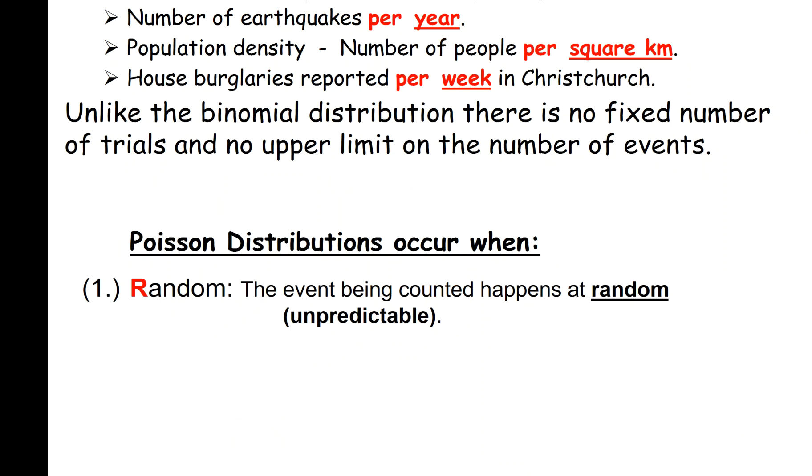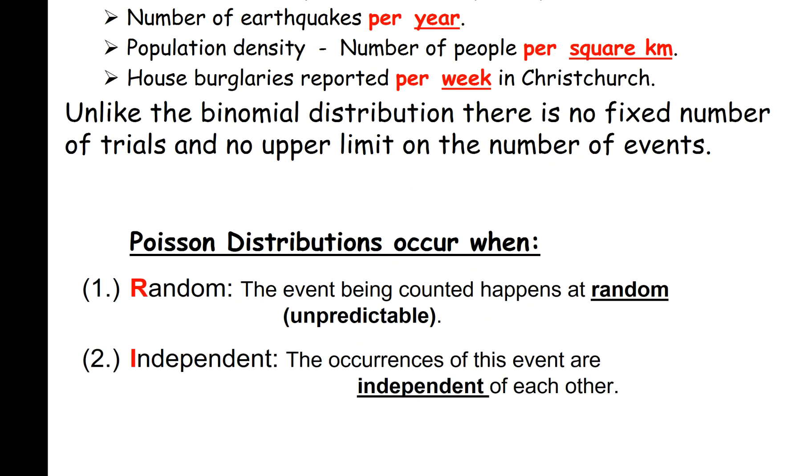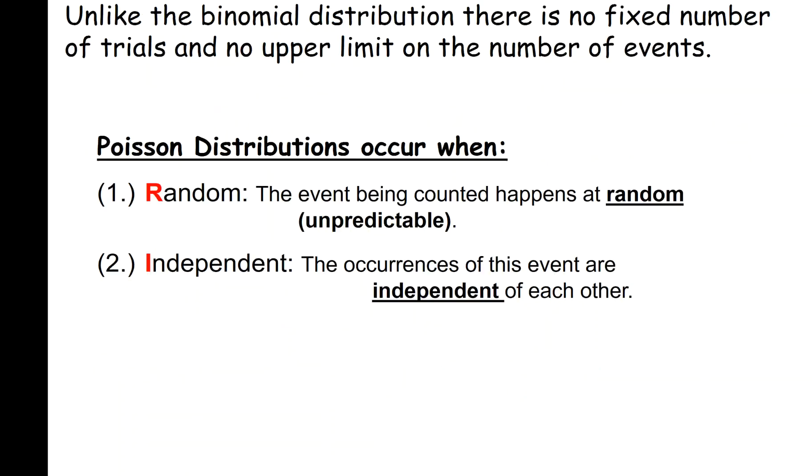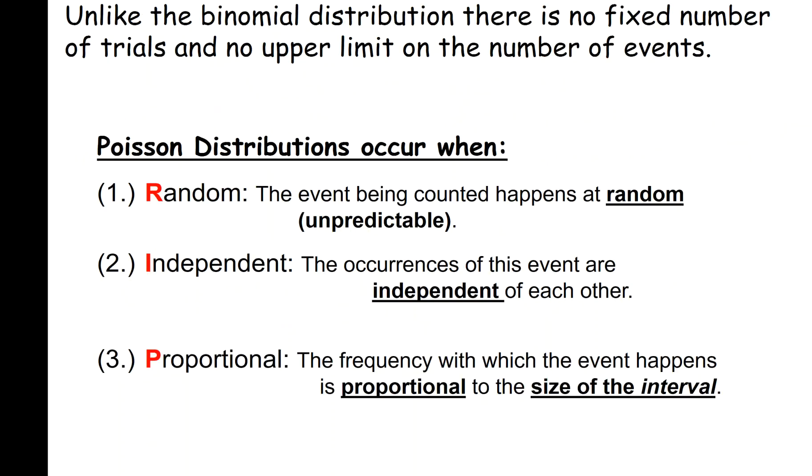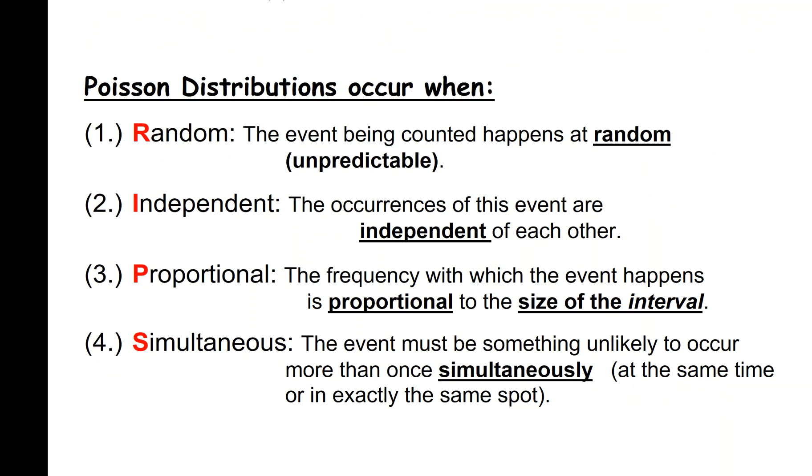Poisson distributions occur when things being counted happen at random - that means there's no way of predicting them. Independently means the occurrences of the events are independent of each other, they don't affect each other. That's why aftershock sequences and earthquakes wouldn't be well modeled by Poisson, because they're not independent - they're part of a sequence of earthquakes. Proportional: the frequency with which the event happens needs to be proportional to the size of the interval, so if you double the interval you double the number of occurrences on average. And simultaneous: we have to assume that the events can't occur simultaneously, so we can't have two or more at once or in the same spot. So the key things with Poisson is that we are dealing with counting of events over an interval.